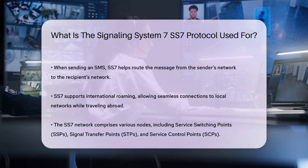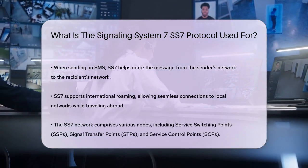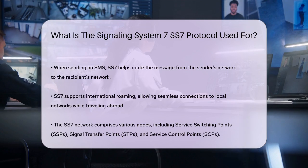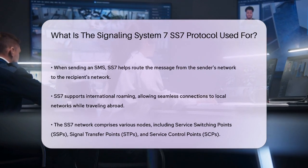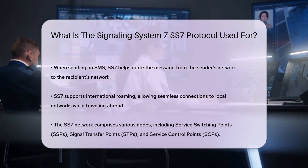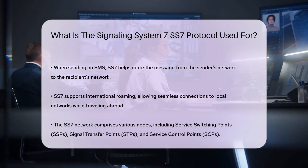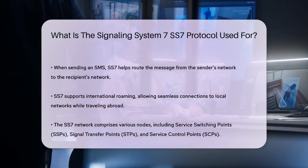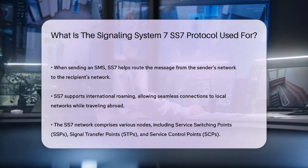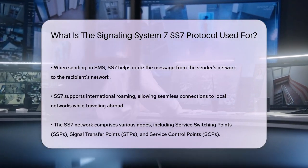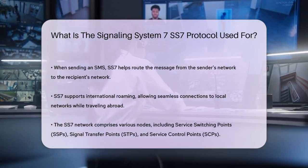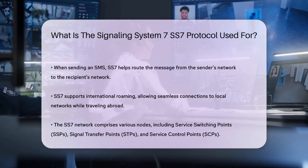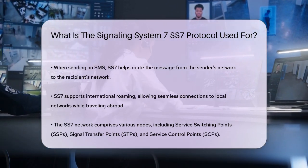This makes international communication smooth and effortless. The SS7 network consists of several types of nodes including service switching points (SSPs), signal transfer points (STPs), and service control points (SCPs). SSPs are the entry and exit points for calls, STPs route the signaling messages, and SCPs manage special features and database queries. These nodes work together to ensure that calls and messages are routed correctly and efficiently.